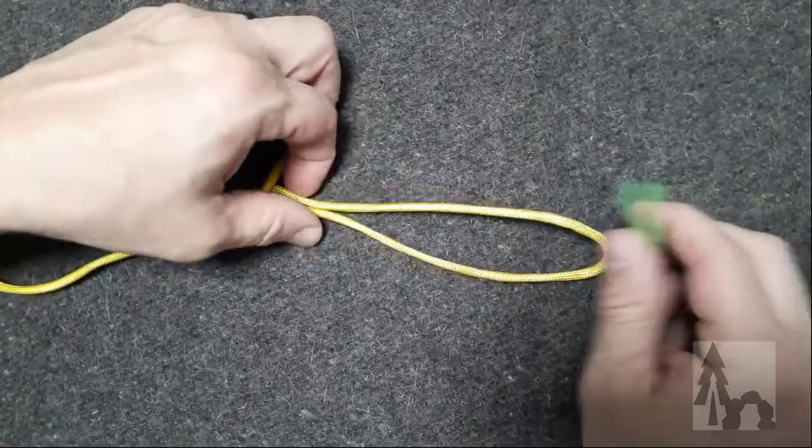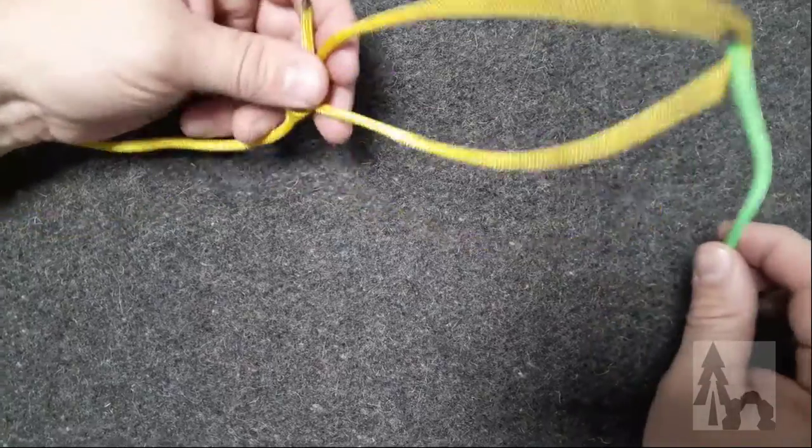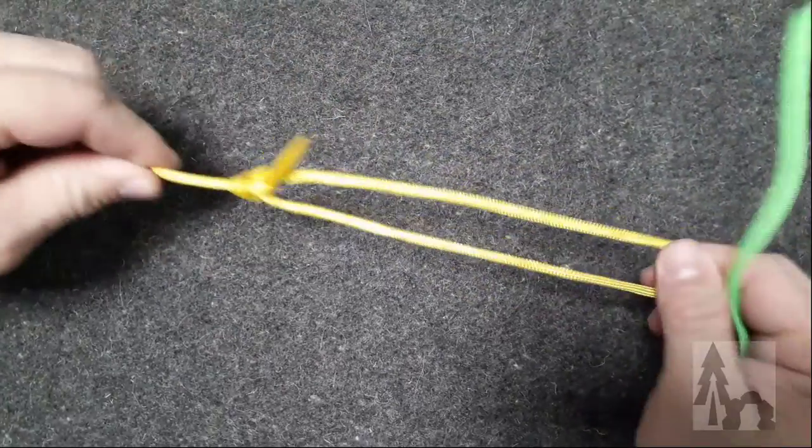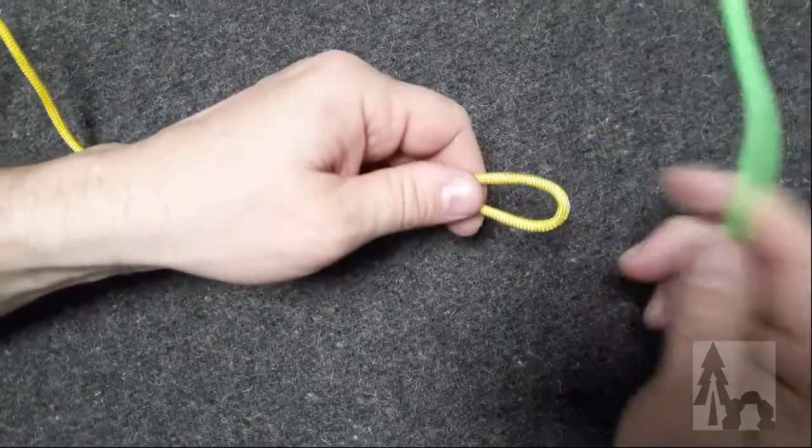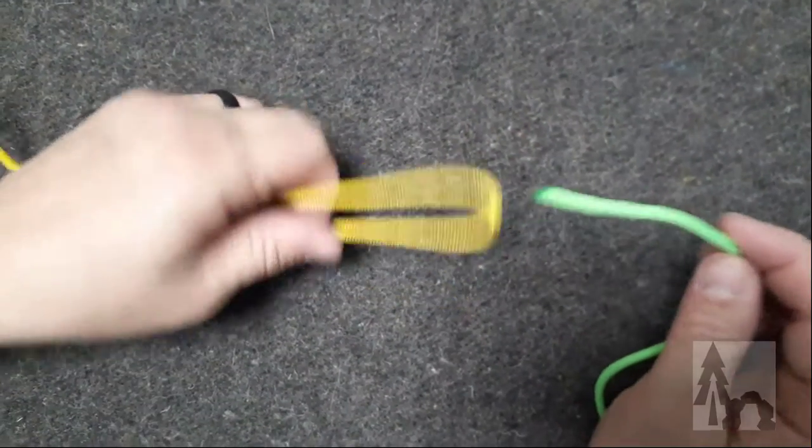This is the simple Simon. Sometimes I use this when I want to attach a line to an already established loop. In this case I've got a bowline in my yellow cord here, and the line I'm tying on is going to be green.